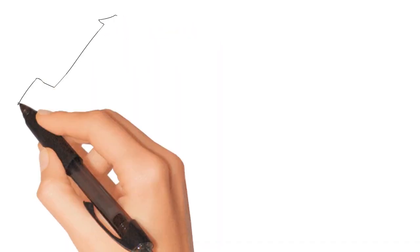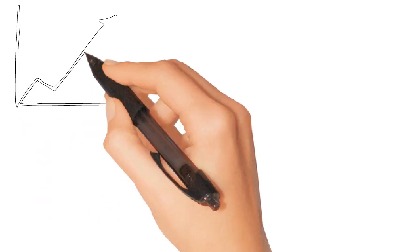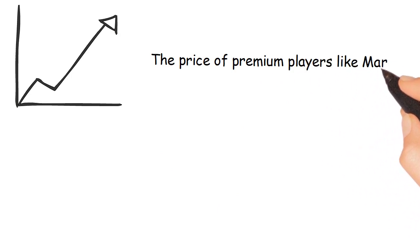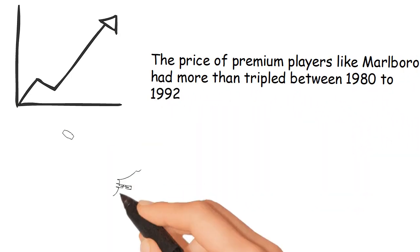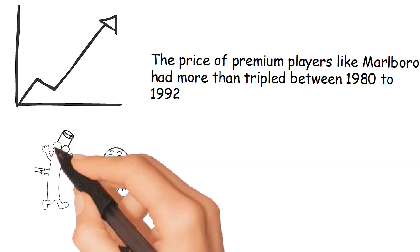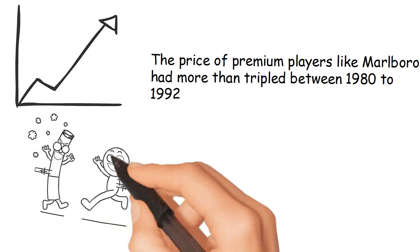One of the major factors influencing the price cut was increasing sales of private label cigarettes. The price of premium players like Marlboro had more than tripled between 1980 and 1992. Price difference of $1 between premium and discount players had increased sales of discount players.